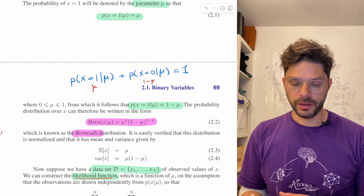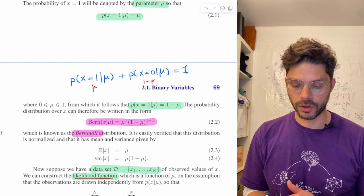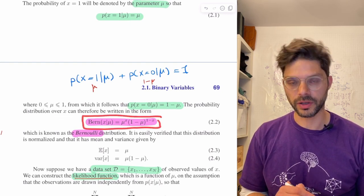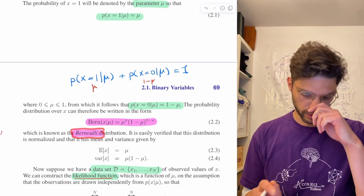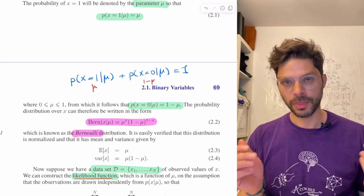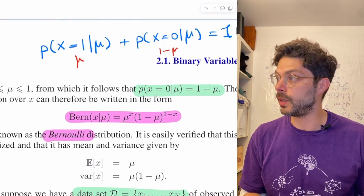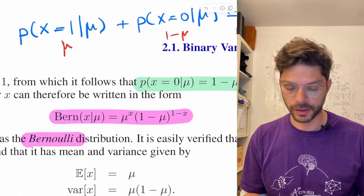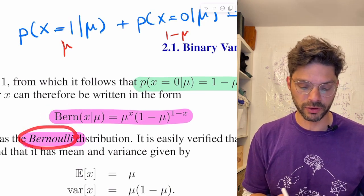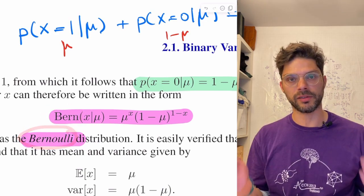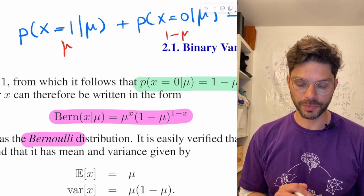The probability distribution over x can therefore be written in the form Bern(x|mu), known as the Bernoulli distribution, named after the Bernoullis who first came up with it.